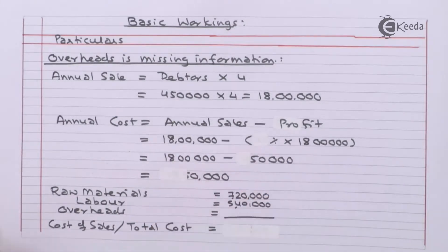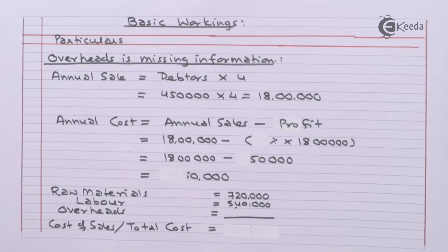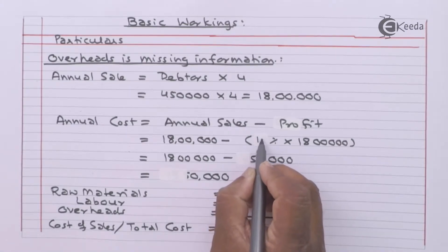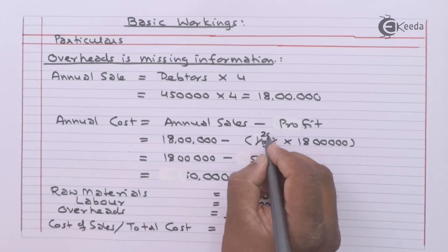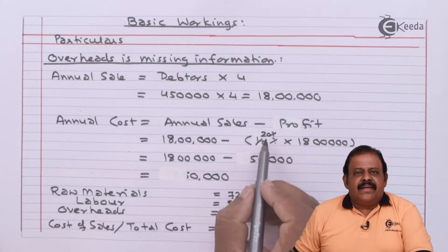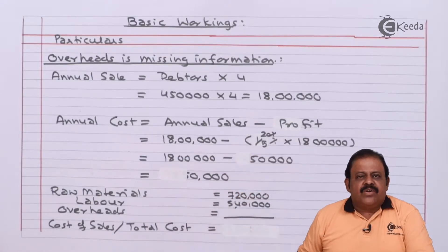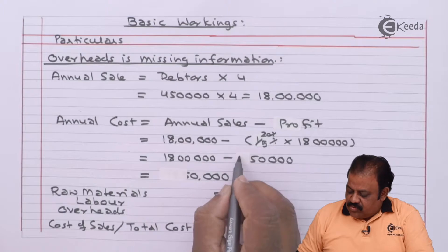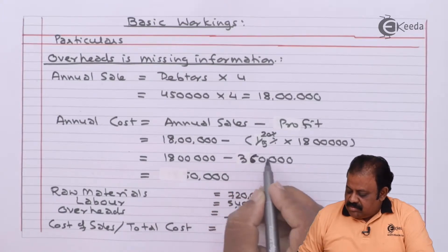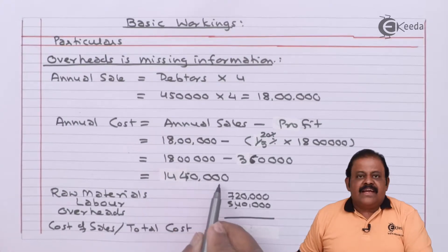Profit is twenty-five percent on cost. We can convert this as a rate of profit on sales by adding one to the denominator: one-fourth on cost is equal to one-fifth on sales. One-fifth, or it can be taken as twenty percent. Twenty-five percent on cost is twenty percent on sales. So twenty percent of eighteen lakhs comes to three lakh sixty thousand. So annual cost is fourteen lakh forty thousand.